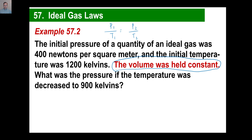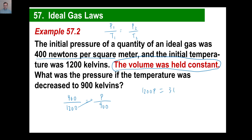Let's look at the first values: pressure is 400, temperature was 1200 — you can probably already see that's one third. The volume was held constant, so what's the pressure when temperature decreases to 900? We don't know the pressure. I'm sure you can see 400 is one third of 1200 — what is one third of 900? The answer is 300. Cross multiply: 1200 times P equals 400 times 900, which is 360,000. Divide by 12 and that's 300, just like we said.